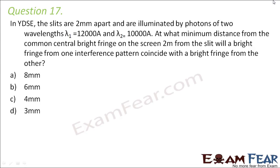Question number 17. In Young's double slit experiment, the slits are 2 mm apart and are illuminated by photons of two wavelengths: lambda 1 is equal to 12,000 angstrom and lambda 2 is equal to 10,000 angstrom. At what minimum distance from the common central bright fringe on the screen, 2 m from the slit, will a bright fringe from one interference pattern coincide with a bright fringe from the other?